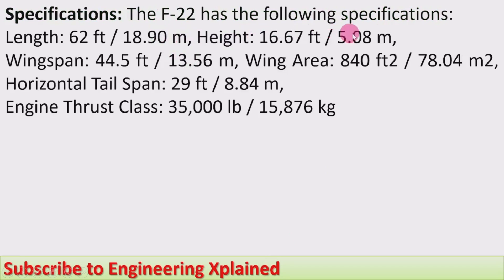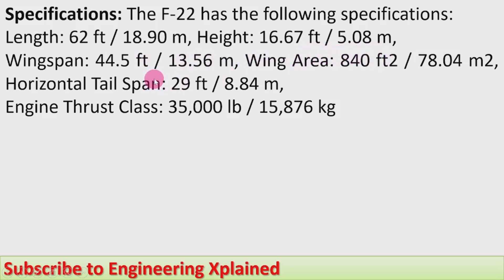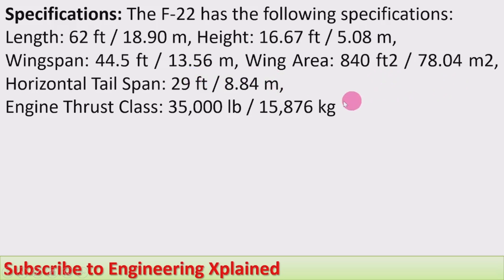Specifications: The F-22 has the following specifications. Length: 62 feet or 18.9 meters. Height: 16.67 feet or 5.08 meters. Wingspan: 44.5 feet or 13.56 meters. Wing area: 840 square feet or 78.04 square meters.